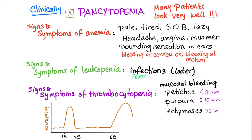Signs and symptoms related to anemia: pale, tired, short of breath, headache, angina, murmur, pounding sensation in the ears. Why? Probably due to a hyperdynamic circulation. Anemia is one of the causes of a hyperdynamic circulation — blood is flowing very fast, causing a murmur in your heart and a pounding sensation in your ears.